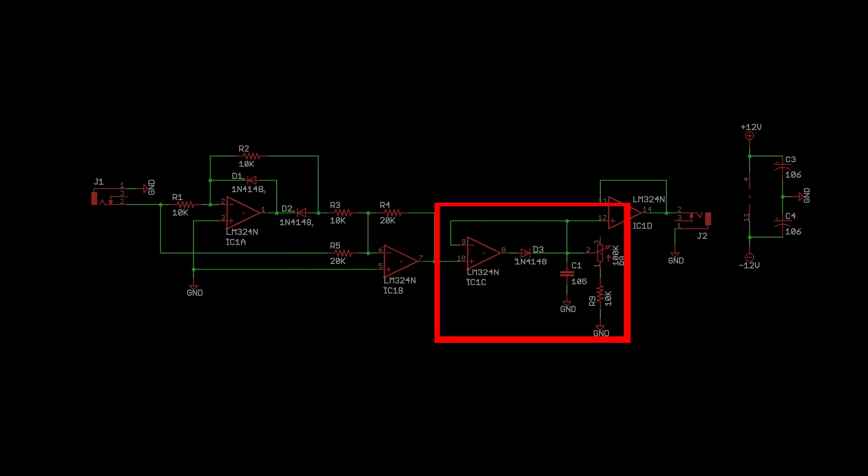This op-amp charges a capacitor that smooths out the rectified signal with this resistor and potentiometer providing control on how fast the charge in the capacitor is released and therefore the tightness and tracking to the input signal.